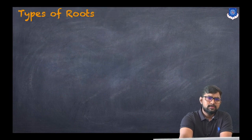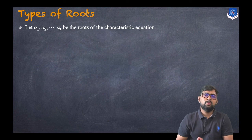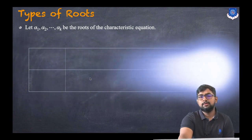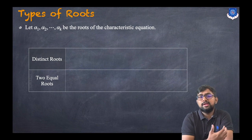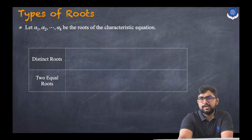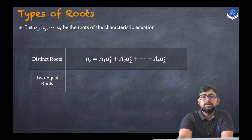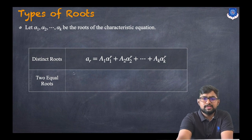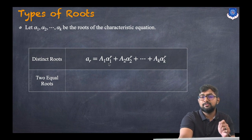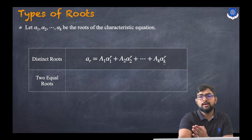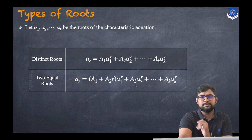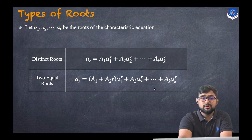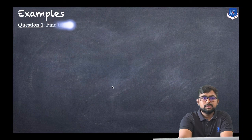Let α_1, α_2, ..., α_k be the roots of the characteristic equation. There are two possibilities: distinct roots or repeated roots. For distinct roots, the general solution is: a_r = a_1 * α_1^r + a_2 * α_2^r + ... + a_k * α_k^r. For two equal roots, the solution combines constants: a_r = (a_1 + a_2 * r) * α_1^r + a_3 * α_3^r + ... + a_k * α_k^r.